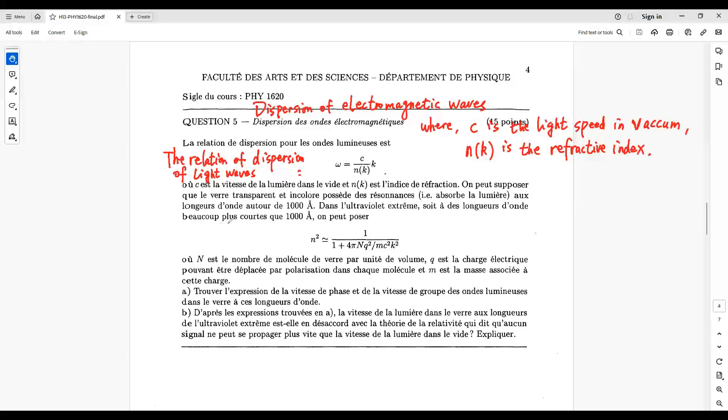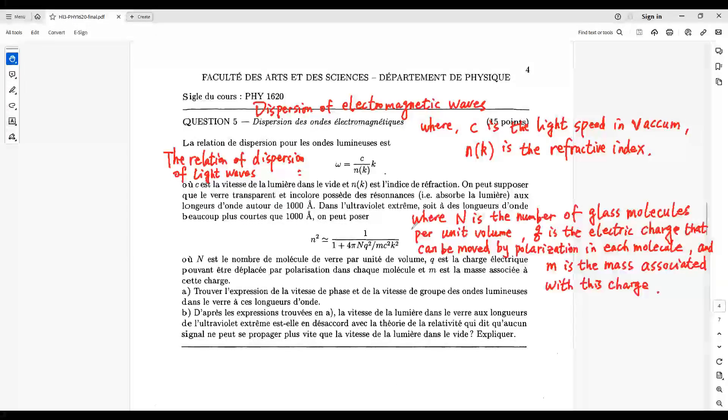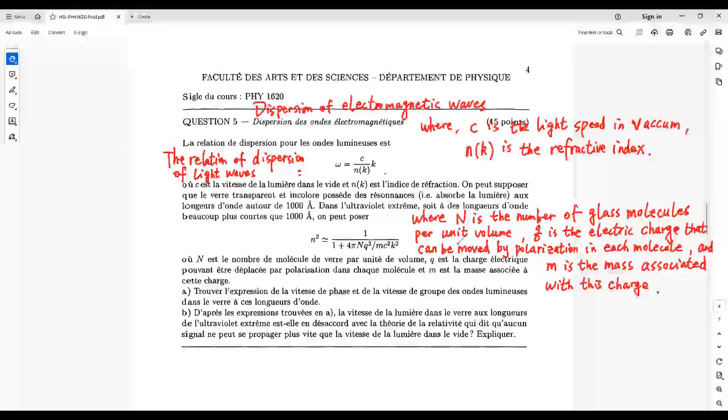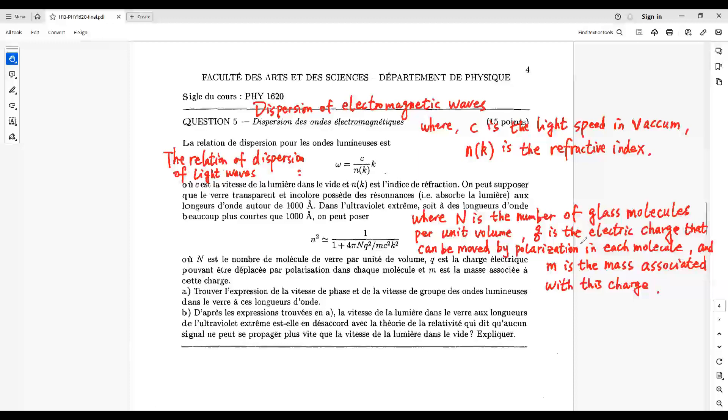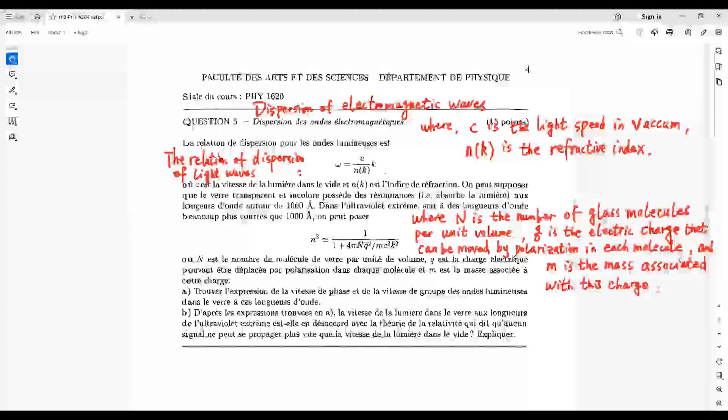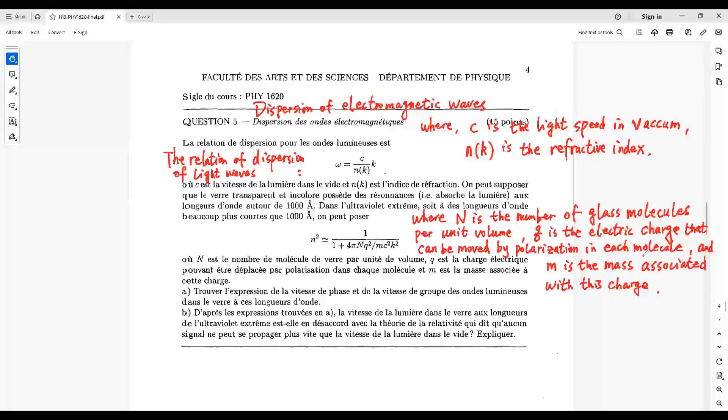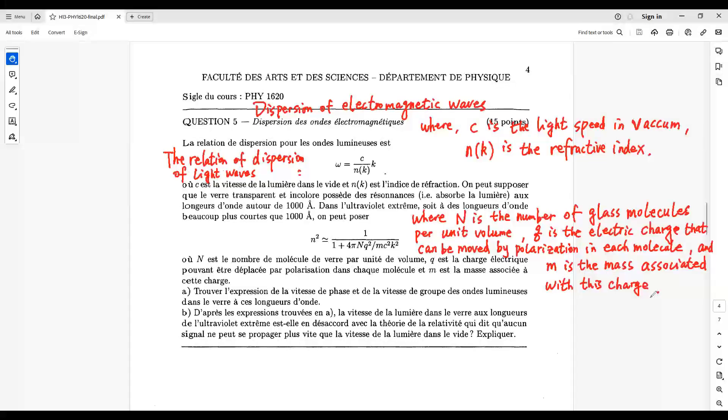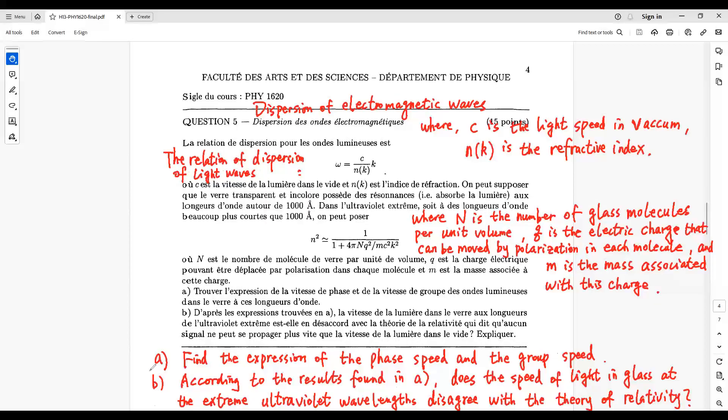We can quote the reflective index given by this one, where N is the number of glass molecules per unit volume, Q is the electric charge that can be moved by the polarization in each molecule, and M is the mass associated with this charge.